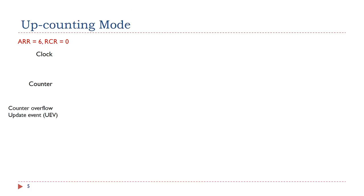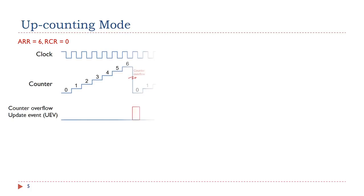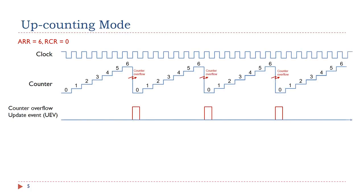We can configure a timer to repeatedly count up, count down, or count up and then count down, in response to the clock signal. In the up-counting mode, the auto-reload register holds the maximum counter value, also called the auto-reload value. The counter counts from 0 to the auto-reload value, then restarts from 0 and generates a counter overflow event. This figure shows an example of the counter behavior when ARR is 6 and the repetition counter is not used.